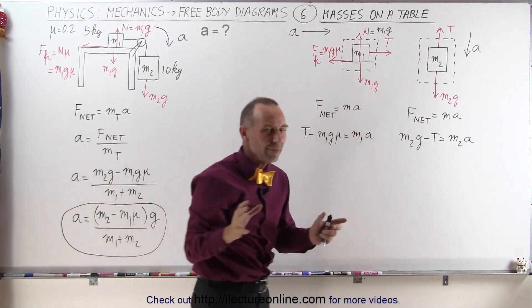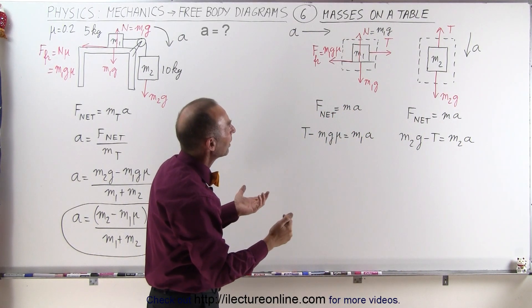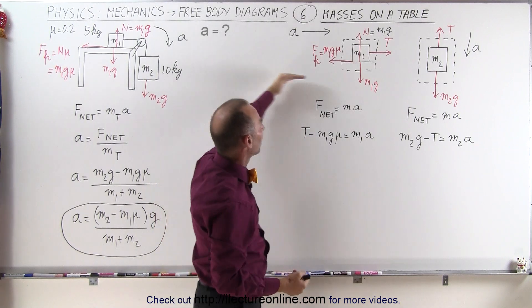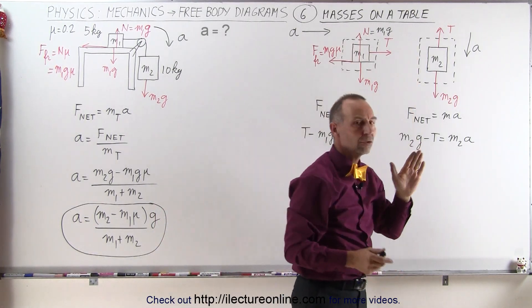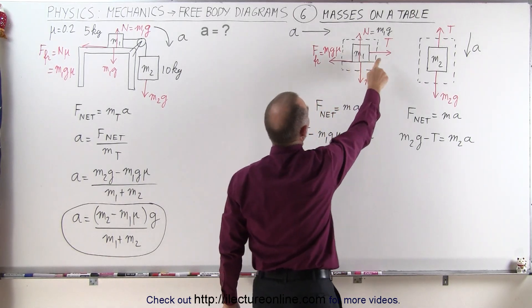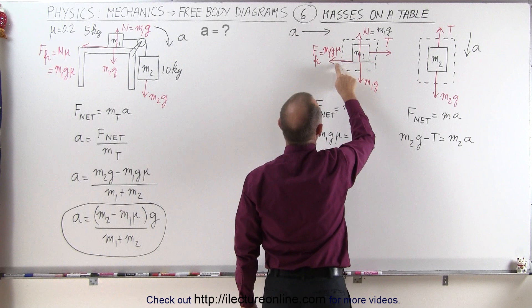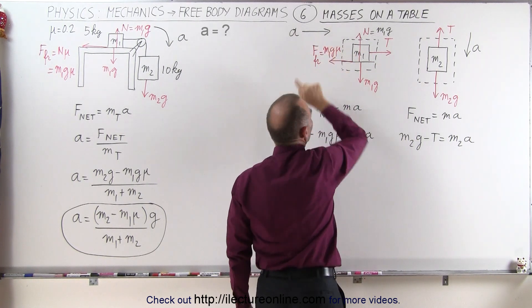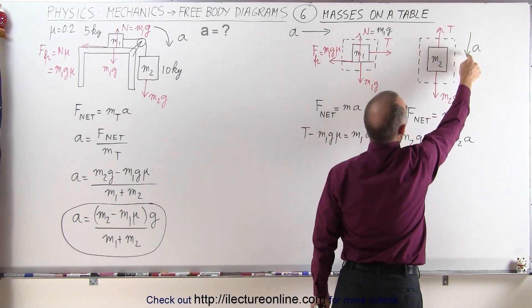This is what usually makes free body diagrams a little bit more confusing. In this case, we have the acceleration left to right, and here we have it up and down. The way we handle that is: if the force is in the same direction, the acceleration is aiding; if it's in the opposite direction, the acceleration is opposing. This force is aiding, this one is opposing.